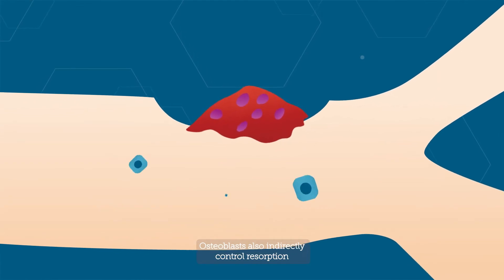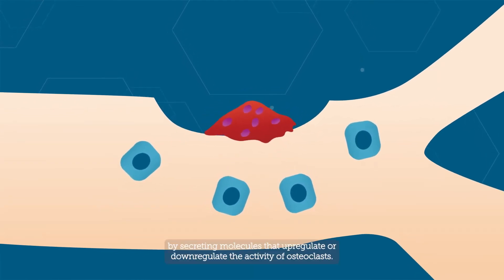Osteoblasts also indirectly control resorption by secreting molecules that upregulate or downregulate the activity of osteoclasts.